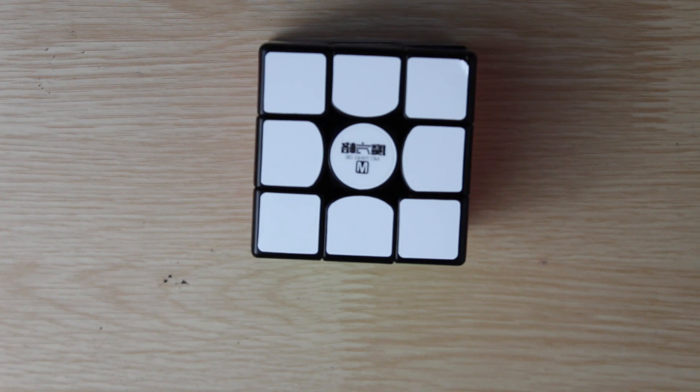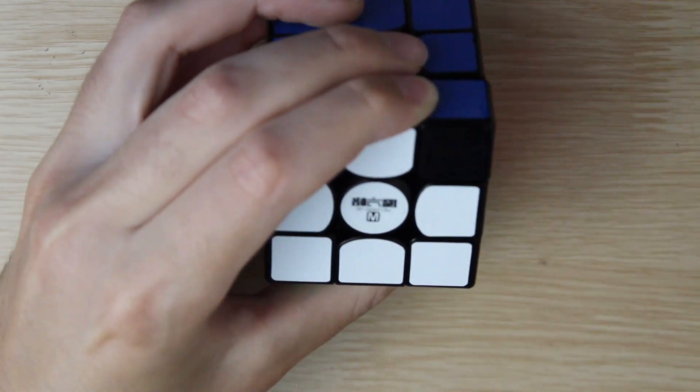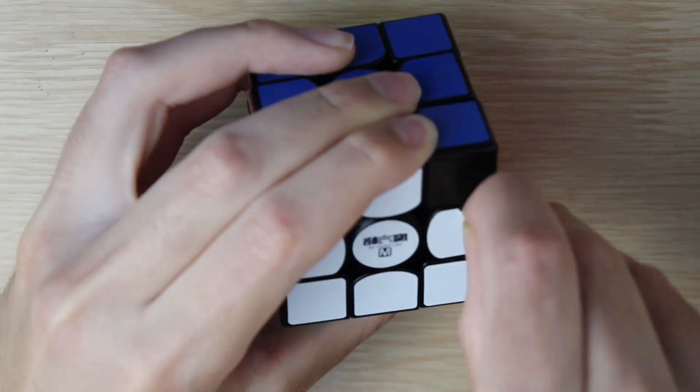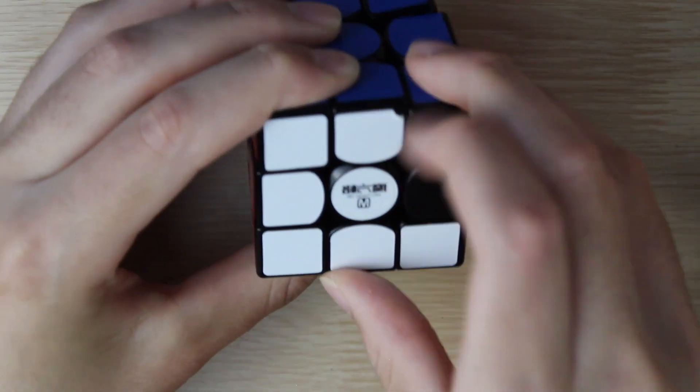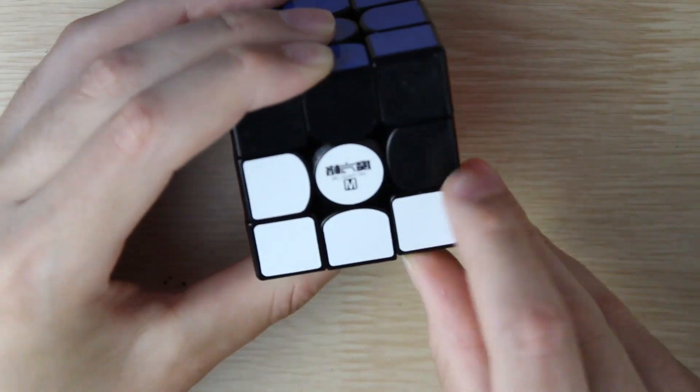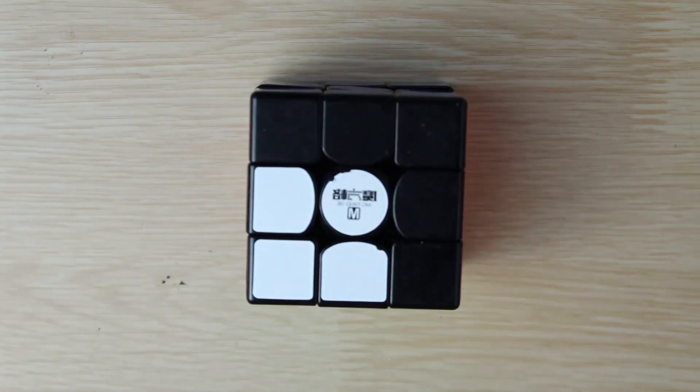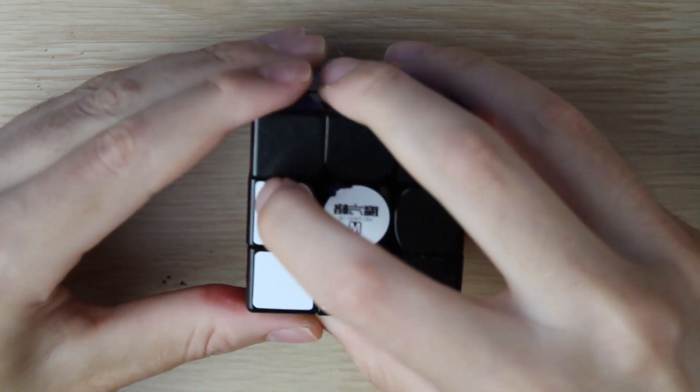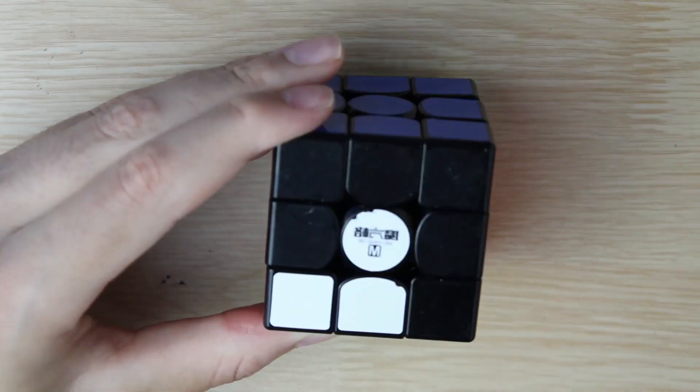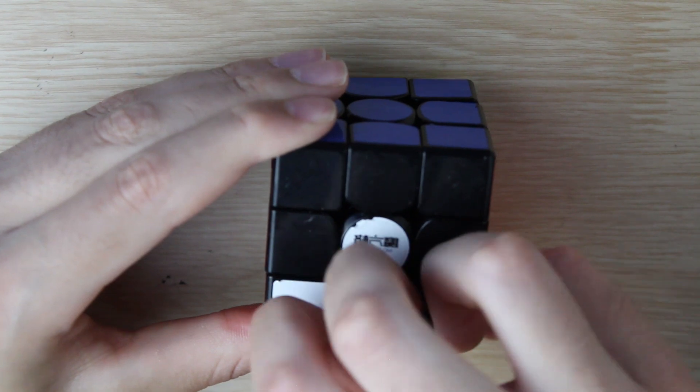Well without further ado, I'm gonna gently peel off the stickers. I really shouldn't have clipped my nails for this. I would use an X-Acto knife but I'm scared I'll dig into the plastic accidentally.